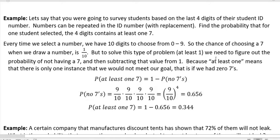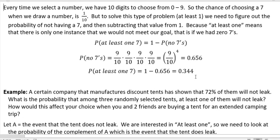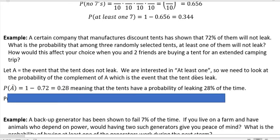Notice what we did. We wanted to know if at least one. So we figured out, well, what happens when there's none? And then we subtracted that from one. At least one more example.